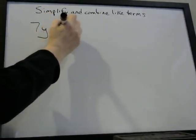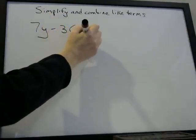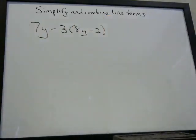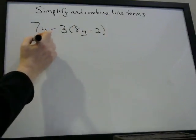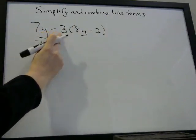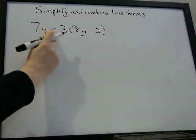We'll do another example. 7Y minus 3 times (8Y minus 2). So this is a little bit trickier. Again, you need to know the distributive property. This is a tricky one because there's a minus sign out here.